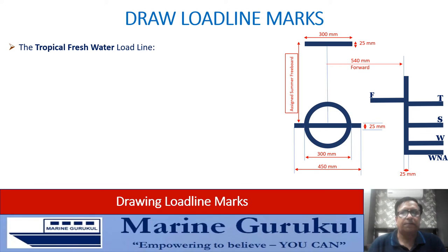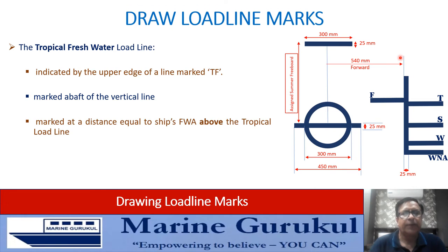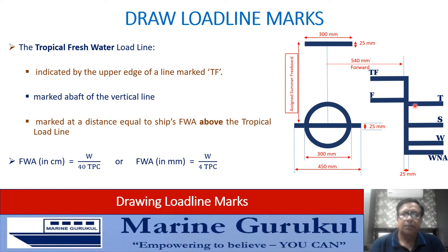Similarly, the tropical fresh water load line mark applies if the vessel is floating in fresh water in the tropical zone. It is indicated by the upper edge of a line marked TF (tropical fresh), also marked above the vertical line. It is marked at a distance equal to the fresh water allowance of the ship, but from and above the tropical load line mark. So the distance between the upper edge of the tropical load line and the upper edge of the TF mark equals the fresh water allowance. Length of each load line is 230 mm; thickness is 25 mm.